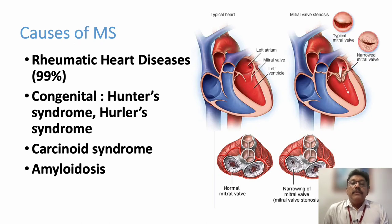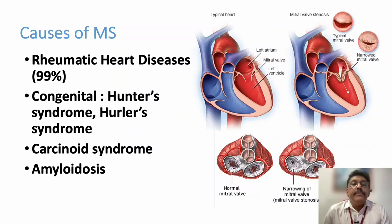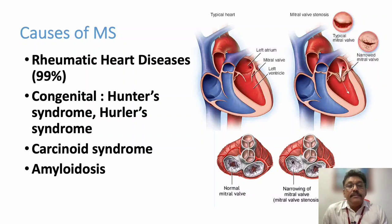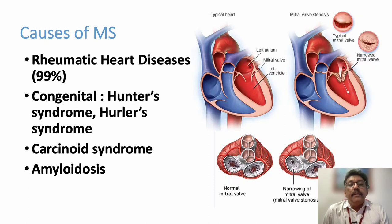Now we will see what are the causes of a stenotic mitral valve. We can see the normal mitral valve and the thickened mitral valve with a narrowing mitral valve orifice. The most common cause for mitral stenosis is rheumatic heart disease, especially in India. One of the most commonly involved valves is the mitral valve — rheumatic mitral valvular disease commonly produces mitral stenosis more than mitral regurgitation.